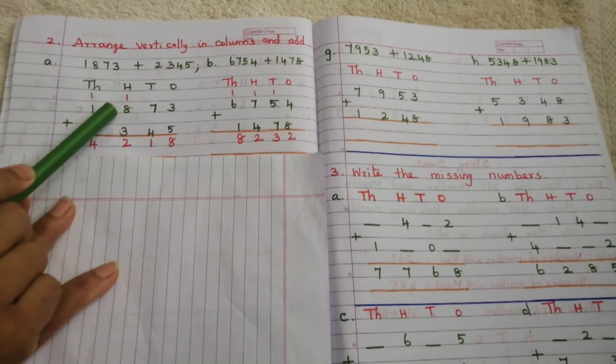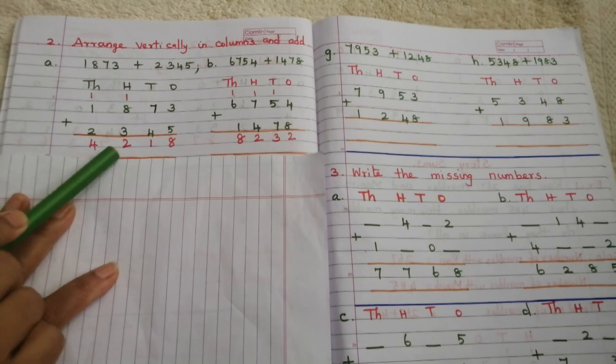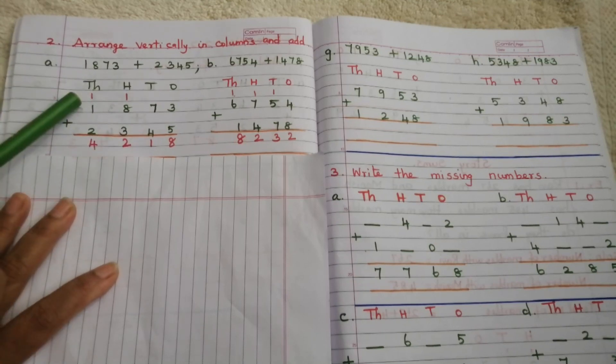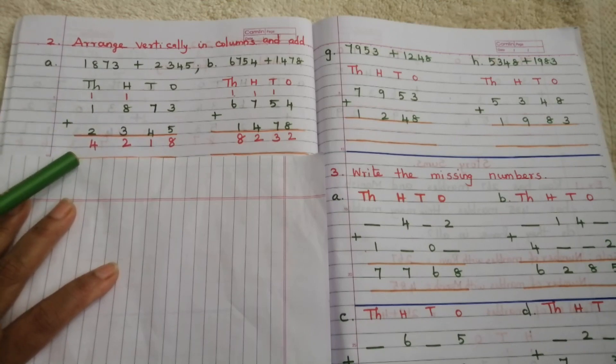Continuing Problem A: 8 plus 1 is 9, 9 plus 3 is 12 — write 2 here and carry 1. Then 1 plus 1 is 2, 2 plus 3 is 4. So the answer is 4,218.